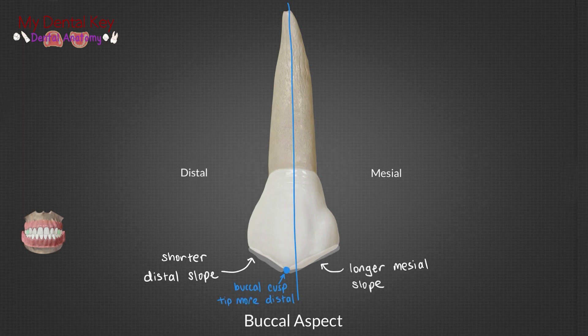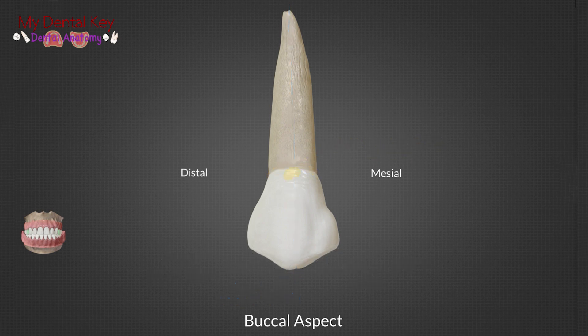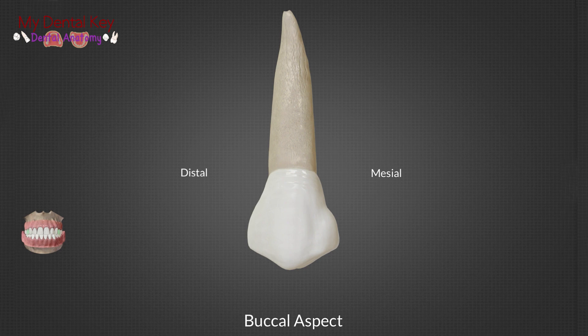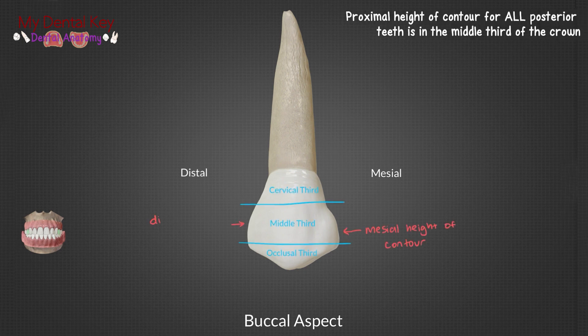This is unlike the lingual cusp tip, which is located mesially to the midline. This is the largest of all the premolars. At the cervical line, you can also see a slight curvature going apically. The first maxillary premolar has a prominent buccal cusp ridge. The mesial and distal height of contour for all posterior teeth, including the maxillary first premolar, is in the middle third.